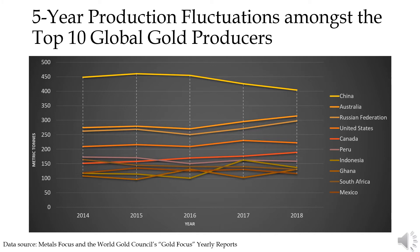In 2018, Chinese gold production accounted for 12% of total global production. China is not only the leading gold producer, but also the leading global gold consumer.